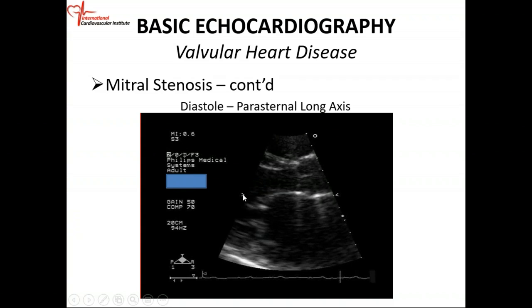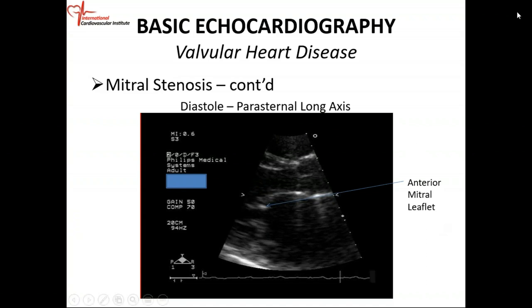When we talk about the subvalvular apparatus — the structures below the mitral valve — the chords can become short, thickened, and calcified as well. That is the anterior leaflet with the characteristic acoustic configuration.